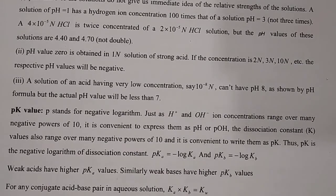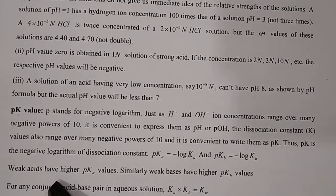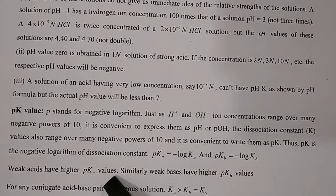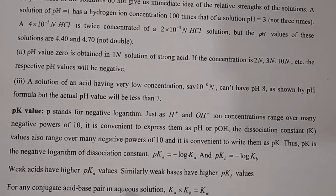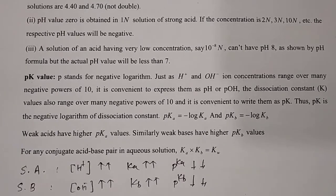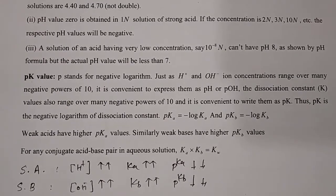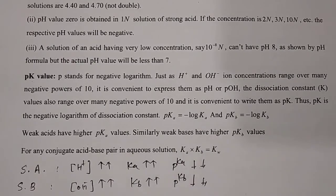pKa = −log Ka and pKb = −log Kb. Weak acids have higher pKa values. Similarly, weak bases have higher pKb values. For the conjugate acid-base principle in aqueous solution: Ka × Kb = Kw.